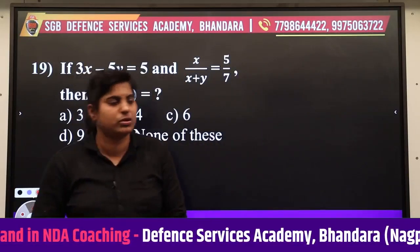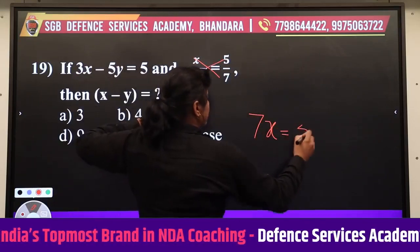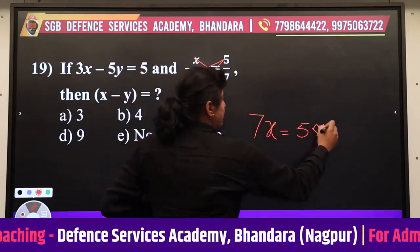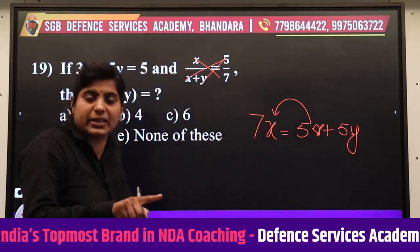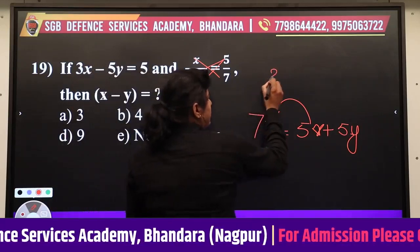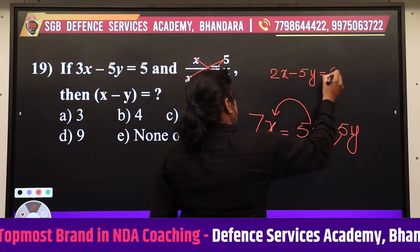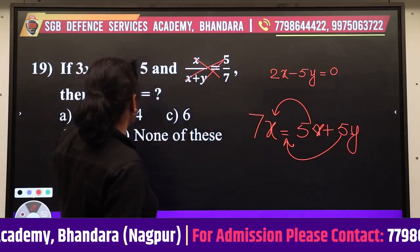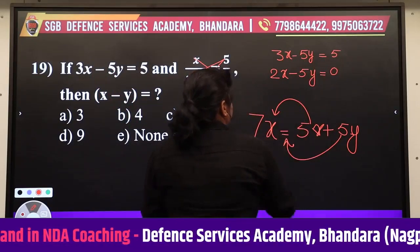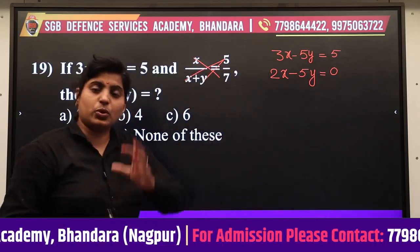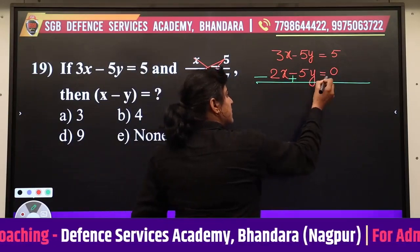Next question: simplifying the equations — 7x and 5x·y terms appear. Rearranging gives 2x = 0 as the first equation, and the second equation is 3x - 5y = 5. Now subtract with the same coefficient approach.